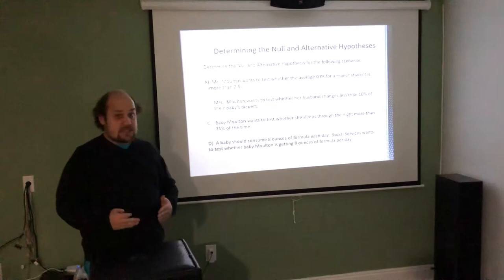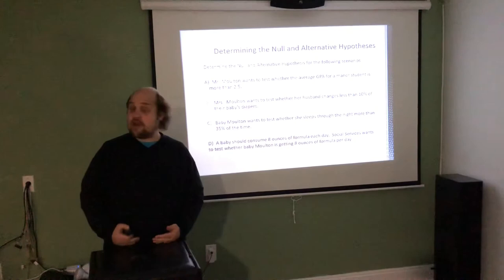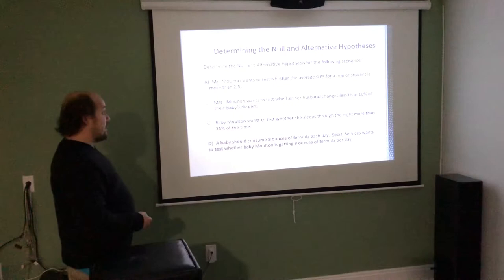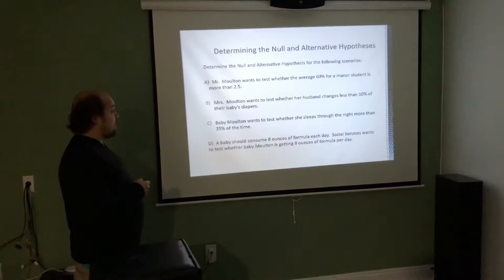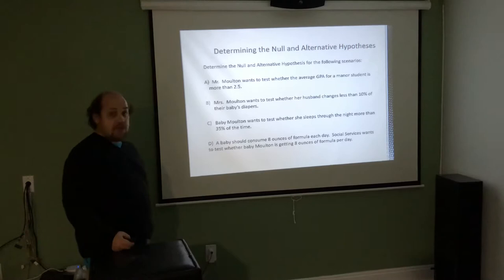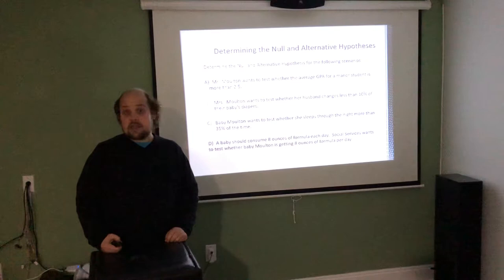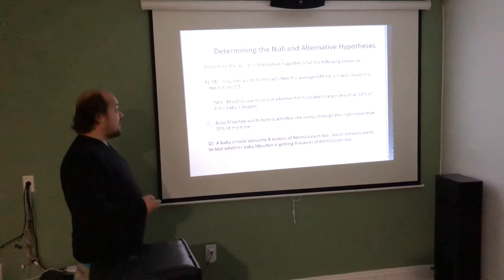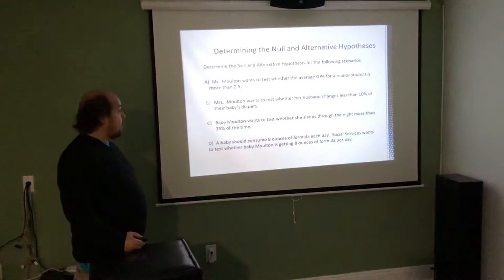Determining the null and alternative hypothesis is just setting up 'mu equals' or 'p equals' in the null, then deciding whether we're trying to prove less than, greater than, or not equal to. In the first example: Mr. Moulton wants to test whether the average GPA for a student is more than 2.5. The null is H₀: μ = 2.5, and the alternative is HA: μ > 2.5.